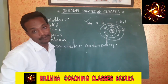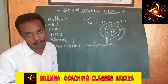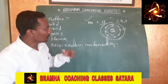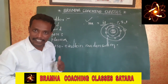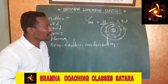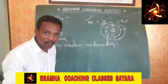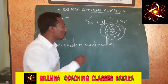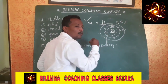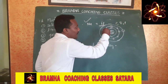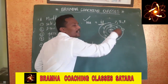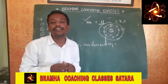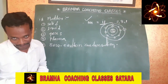One question arises: what is the definition of atomic number? The simple definition is that the number of protons or electrons is called the atomic number. Sodium has 11 protons and 11 electrons rotating in orbit, so the atomic number of sodium is 11.